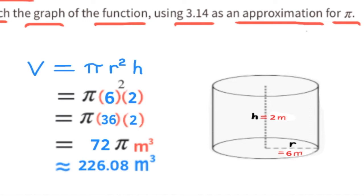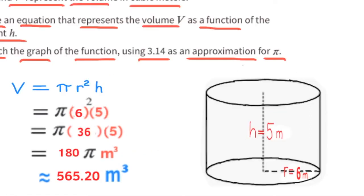Let's make one more example, and this time the height will be 5 meters. Pi, or 3.14, times 36 times 5. Since 36 times 5 is 180, we have 180 times pi meters cubed. 180 times 3.14 is 565.2. So the volume of this cylinder would be approximately 565.2 meters cubed.